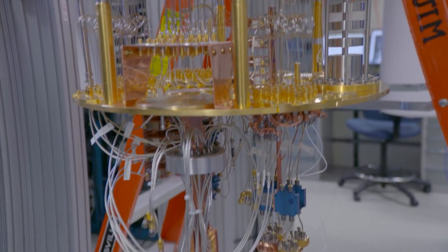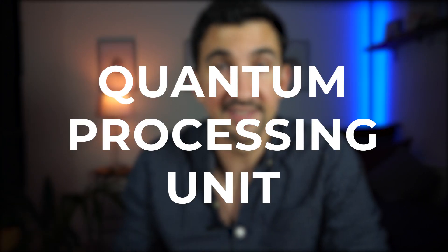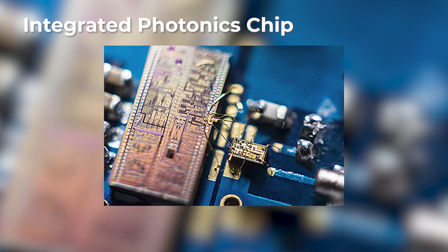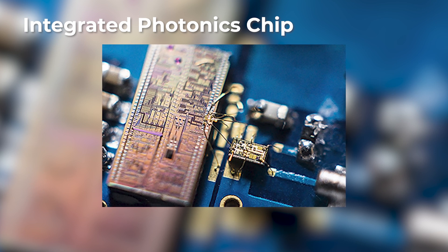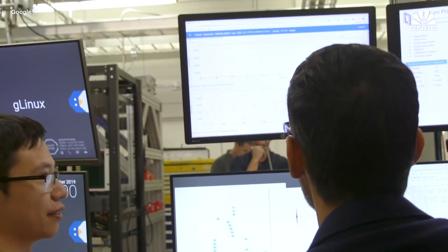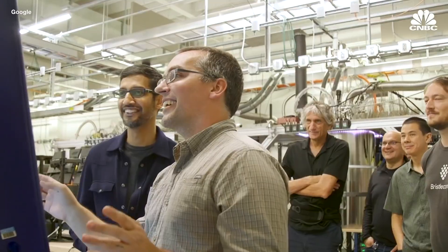The part of the quantum computing system that the HAL directly interfaces with is the QPU, or Quantum Processing Unit — the device that performs logical operations on qubits to process the data. For example, in a quantum computer that uses photonic qubits, the QPU would be a microchip containing photonic circuits and components that manipulate the length or properties of those pathways. The states of these qubits are then measured and interpreted into useful information to be used by the system.